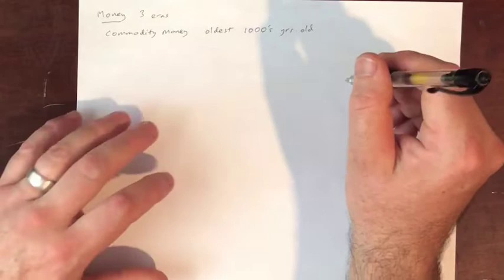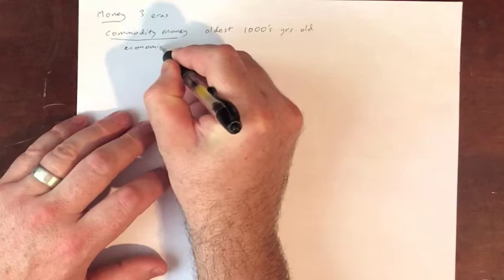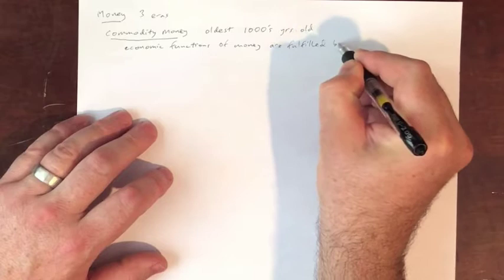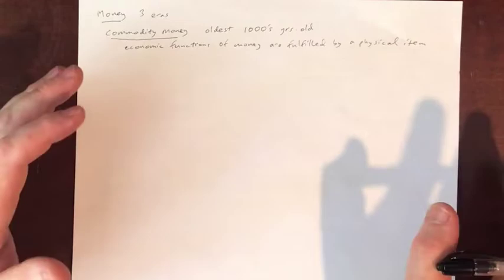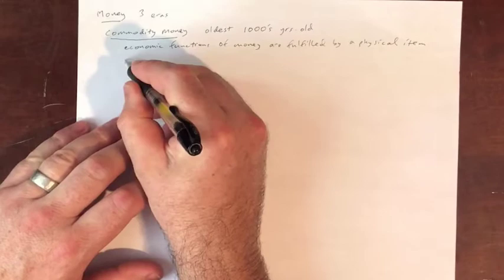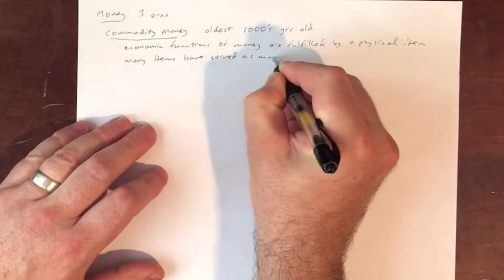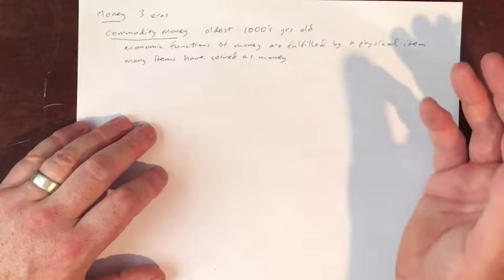What commodity money basically means is that the economic functions of money are fulfilled by a physical item — a commodity. Now, it would be nice if we could be more specific, but the fact of the matter is that many different items have served this function, many different kinds of physical commodities.